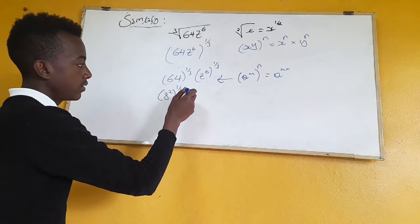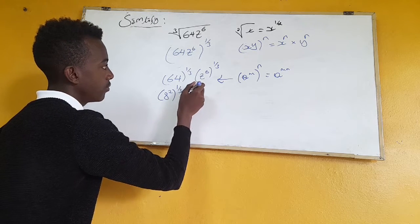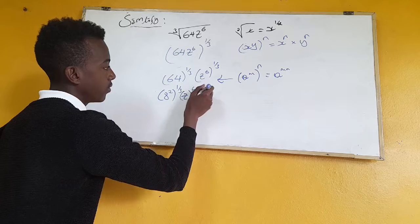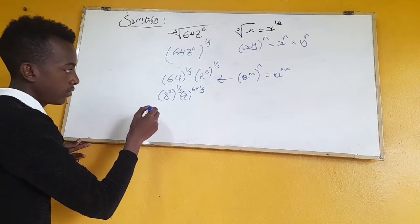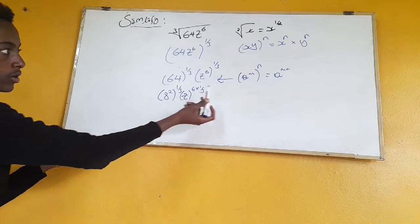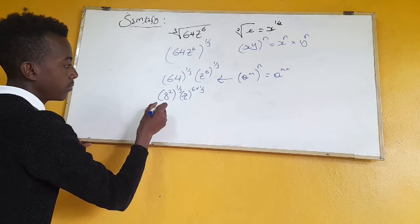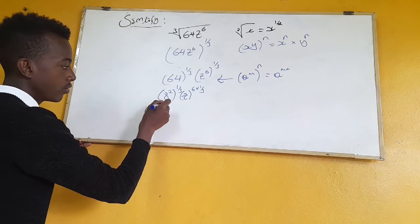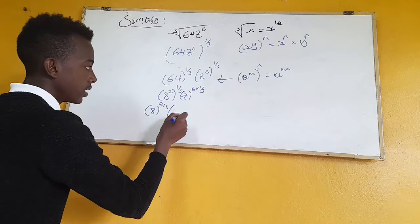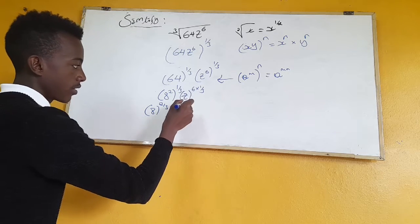So this is y to the power of 6 times 1 over 3, which gives us the power of 6 over 3.